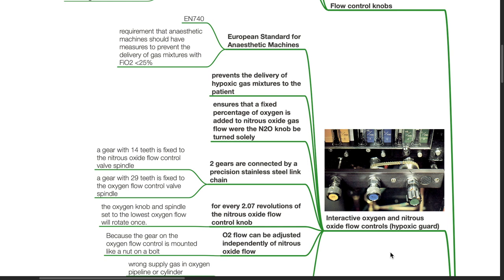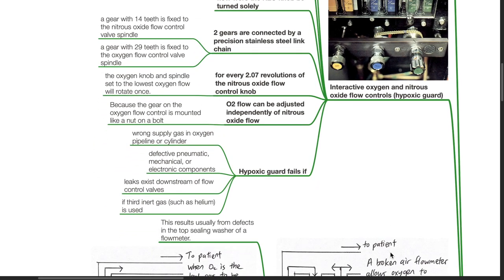Oxygen flow can be adjusted independently of nitrous oxide flow because the gear on the oxygen flow control is mounted like a nut on a board. The hypoxic guard fails if wrong supply gas in oxygen pipeline or cylinder occurs, defective pneumatic, mechanical or electronic components occur, leaks exist downstream of the flow control valve, and if a third inert gas such as helium is used.